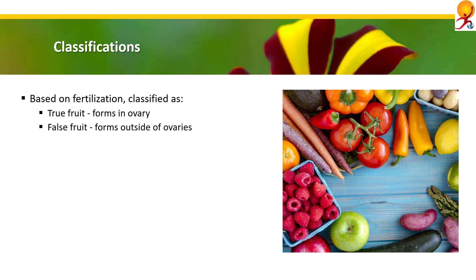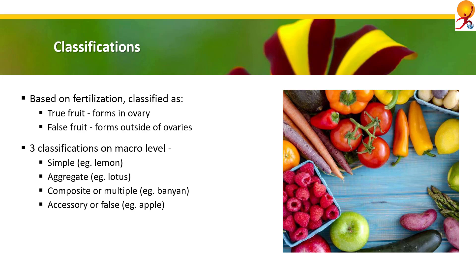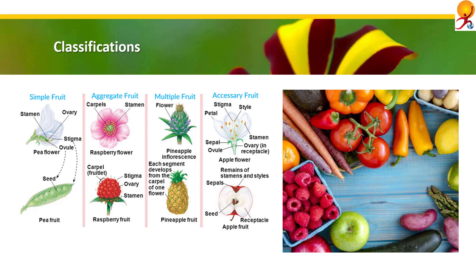At the macro level there are different classifications: simple fruit — such as bean, mustard, mango, lemon, etc.; aggregate fruit — strawberry, lotus, raspberry, custard apple, etc.; composite fruit — jackfruit, mulberry, panion, etc.; and there is also accessory or false fruit, such as apple. In this diagram you can see the classifications of simple fruit, aggregate fruit, multiple fruit, and accessory fruit.